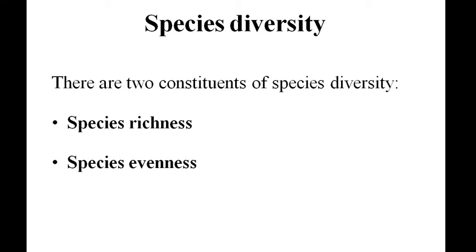If the number of individuals within a species is fairly constant across communities, it is said to have high evenness. And if the number of individuals varies from species to species, it is said to have low evenness.